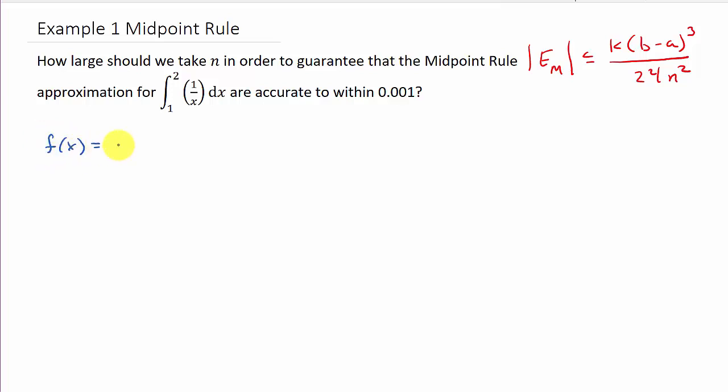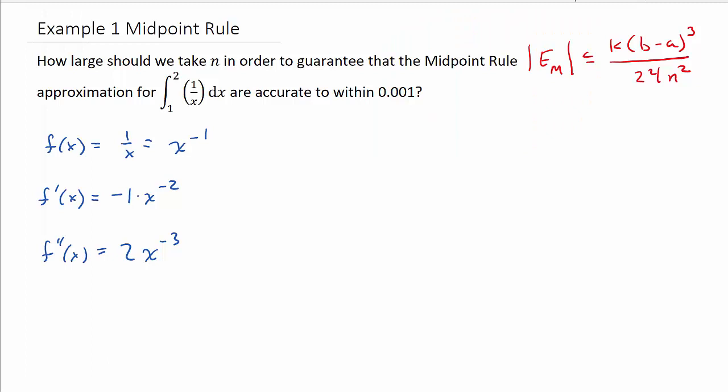Alright, so let's go ahead and take a look. So, I've got f of x is equal to 1 over x. Alright, and I need the second derivative. So, what I'm going to do is I'm going to write this as x to the negative 1. Just easier to take the derivative. So, I've got f prime of x is equal to, well, the negative 1 comes down, x to the negative 2. And then I've got f double prime of x. Well, negative 2 times negative 1, that's 2.